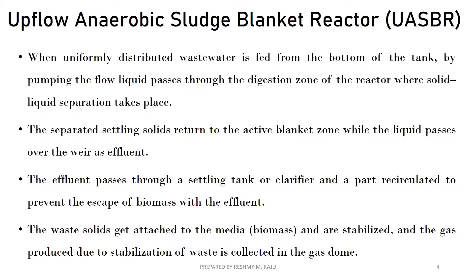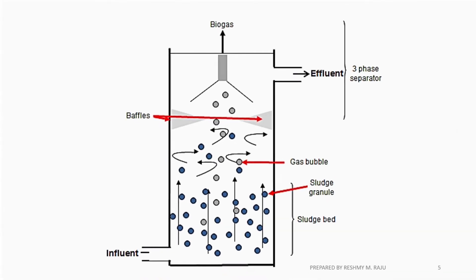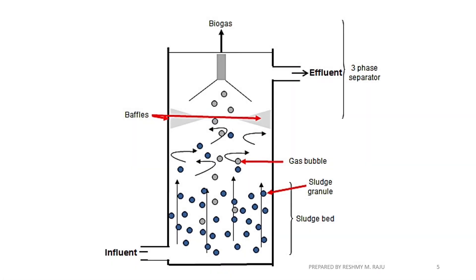The reactor uses phase separation and a gas collector. The blanket zone contains the sludge blanket, where we collect gas, solids, and effluent. A secondary clarifier handles settling. Part of the sludge is reintroduced to establish and stabilize the blanket zone with the required microorganisms. A gas dome collects the biogas.